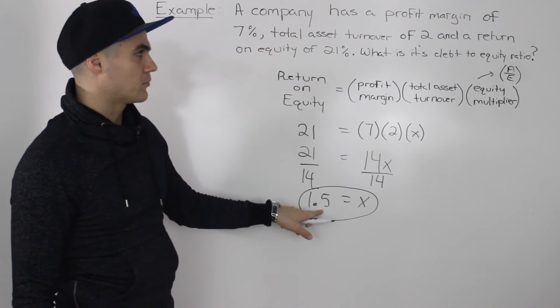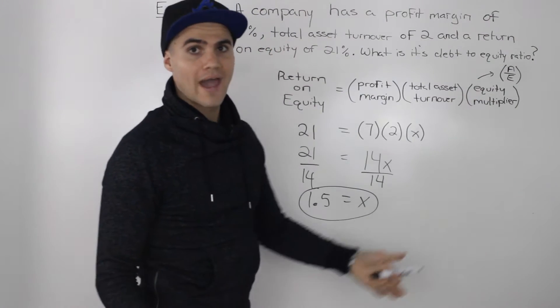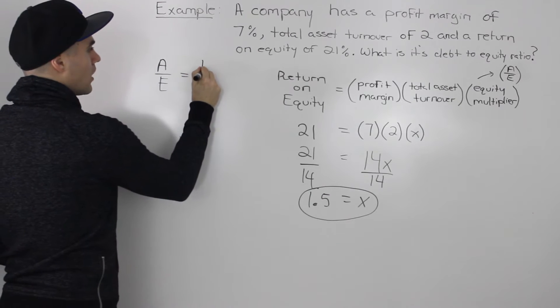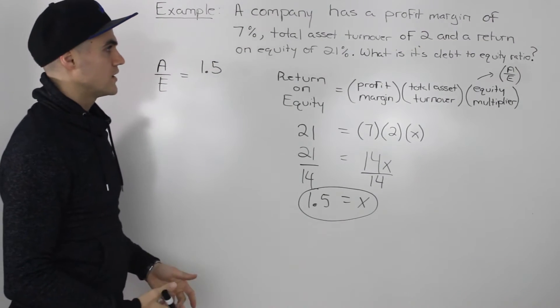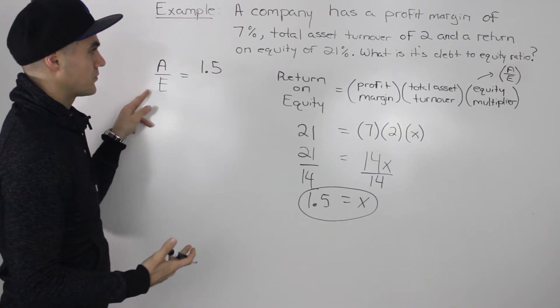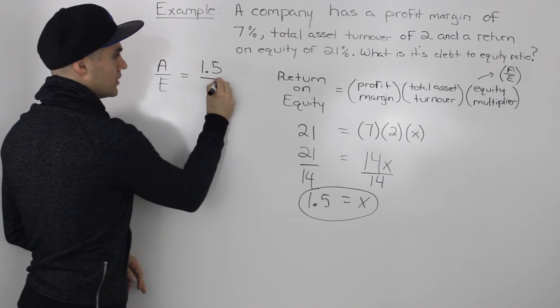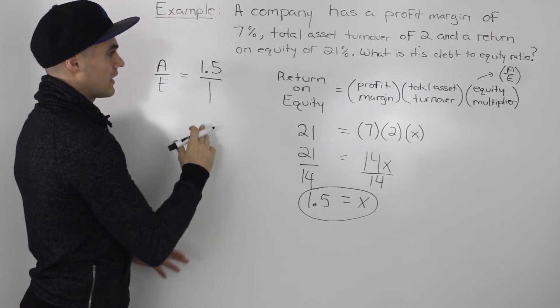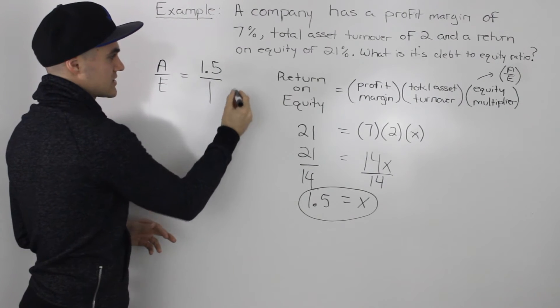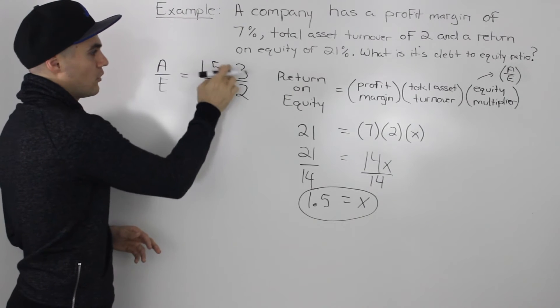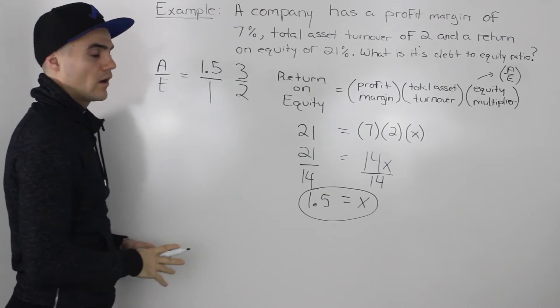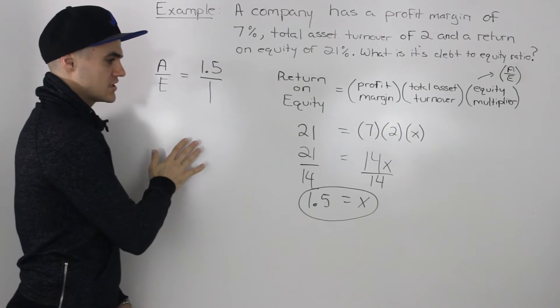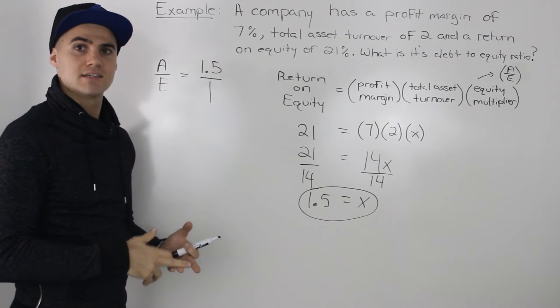So now since we know that our equity multiplier is 1.5, we know that the assets over equity ratio is also equal to 1.5. So we can write that the assets over the equity is equal to 1.5. Now, whenever they give you a ratio, whether a debt to equity ratio or an assets to equity ratio, and it's in decimals, always take that decimal and put it over 1. If it's given as a fraction, then just leave the fraction as is. But if they give you a decimal, always put it over 1. And the reason you want to do that is because whenever you're given a ratio, you always want to construct a mini balance sheet to see the proportions of the assets, the debt, and the equity.